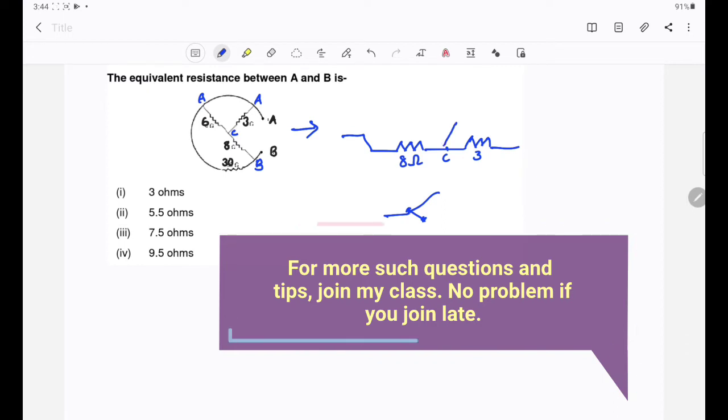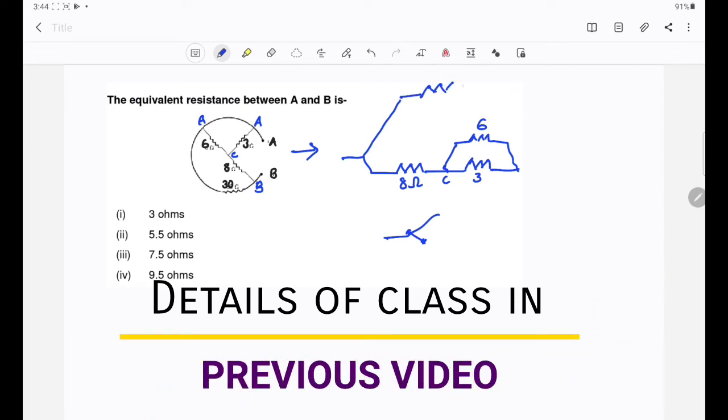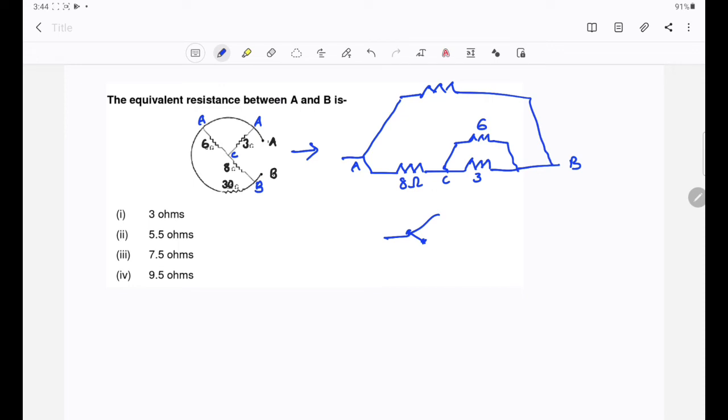That is A, C node across. 6 into 3 by 6 plus 3, that is 9, and that is 2. 6 into 3 is 18, 18 by 9 is 2. So this is totally 2.